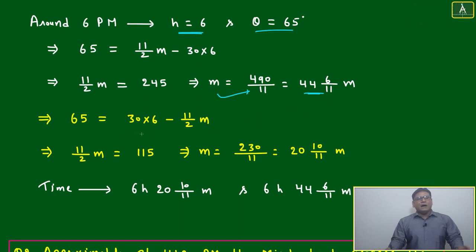Then 65 = 30×6 - (11/2)m. The equation remains the same with just a sign change. Solving: (11/2)m = 115, so m = 230/11 = 20 10/11 minutes.